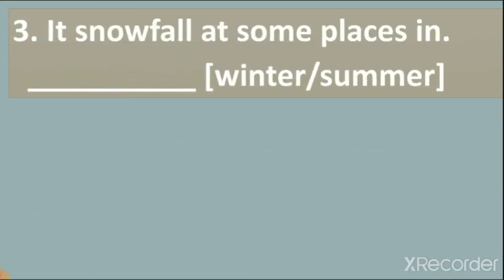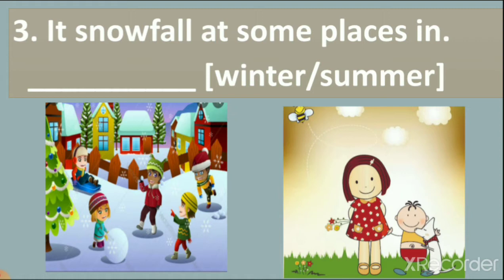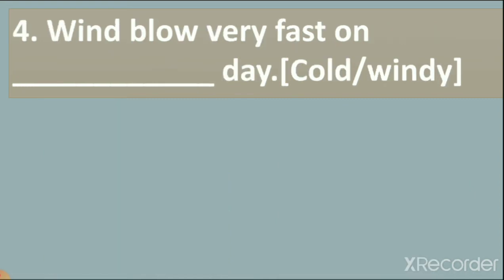Fill-in-the-blank number three: It snowfalls at some places in ___. Again we have two pictures — winter and summer. In which season does it snow? In winter season there is snowfall in some places in our country, like Kashmir, Shimla, and Manali. In summer season the sun shines very brightly.